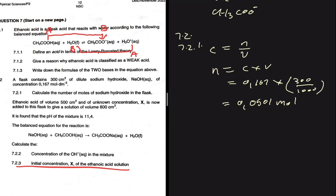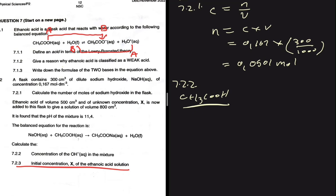In 7.2.2, ethanoic acid (CH₃COOH) of volume 500 cm³ with unknown concentration X is added to the flask to give a total solution volume of 800 cm³. It is found that the pH of the mixture is 11.4, which means the mixture is basic.